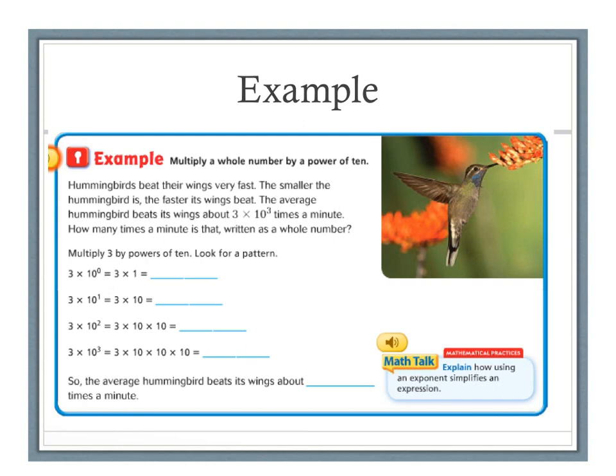The average hummingbird beats its wings about 3 times 10 to the third power times a minute. How many times a minute is that written as a whole number?